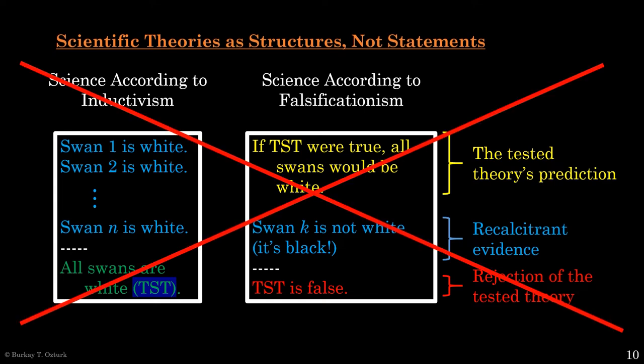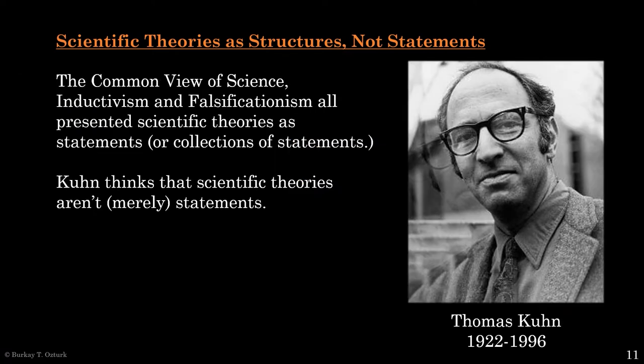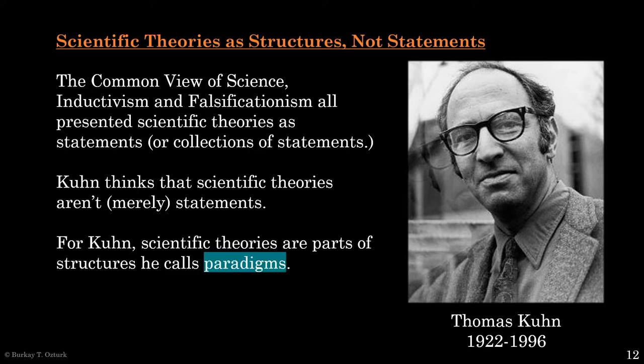But Kuhn thinks that this is overly simplistic. Scientific theories, according to him, aren't just statements. According to Kuhn, scientific theories are parts of larger complex structures, which he calls paradigms. To understand what a paradigm is, we need to first understand how Kuhn thinks about the relationship between theory and observation.